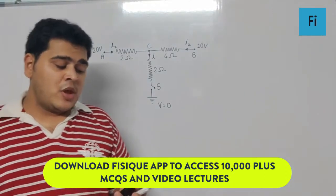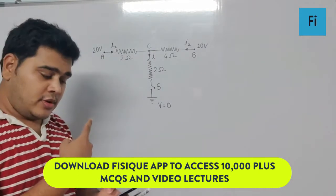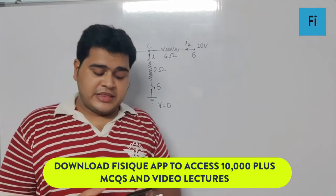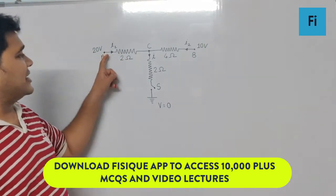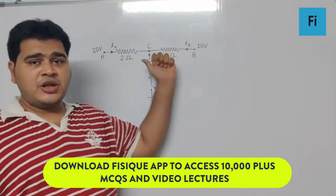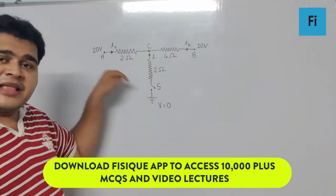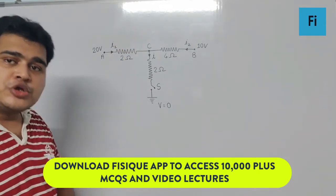Yes guys, the next question says when the switch S in the circuit shown is closed, then the value of current i will be. As you can see there is current i1 coming in this direction, i2 coming in this direction, and adding to form i. Definitely that i can flow only if the switch is closed, so they mentioned that the switch is closed.